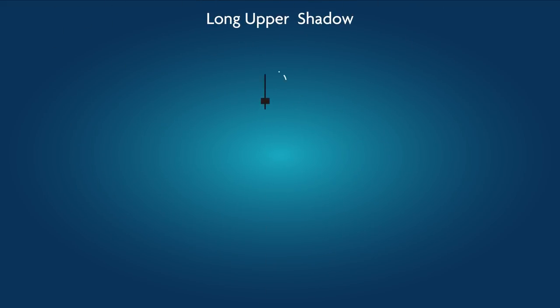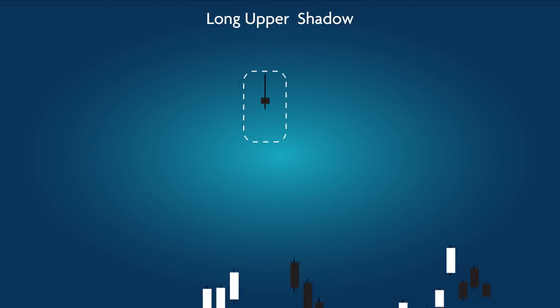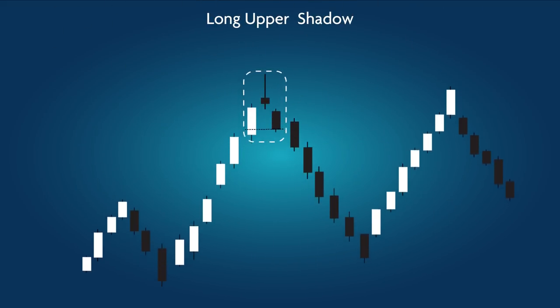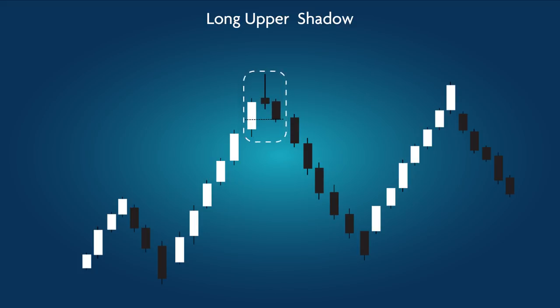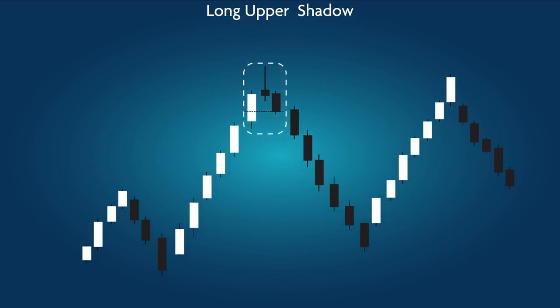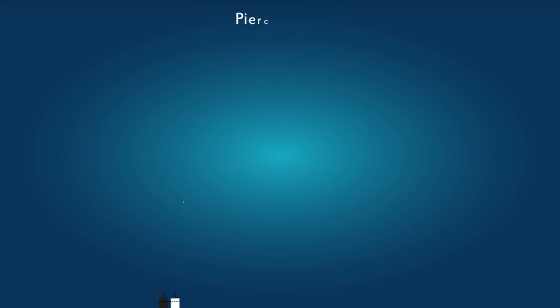Long Upper Shadow: a bearish pattern. Its movement peaks with a candle having a long topping tail, followed by a black candle dropping at least halfway below the body of the clear candle preceding the topping tail candle.